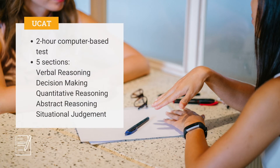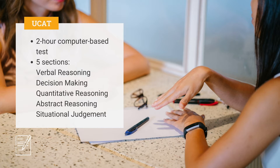What's on the test? The UCAT is a two-hour, multiple-choice, computer-based test which consists of five sections: verbal reasoning, decision-making, quantitative reasoning, abstract reasoning, and situational judgement.